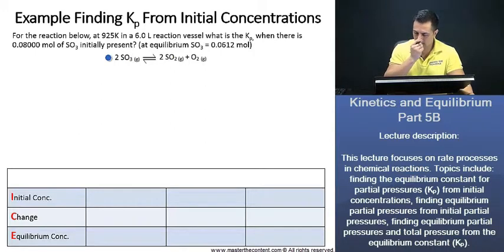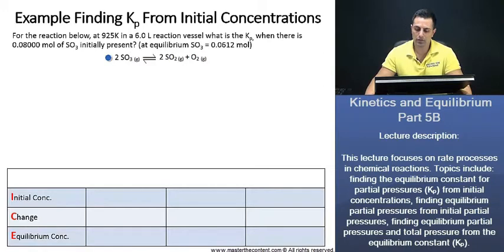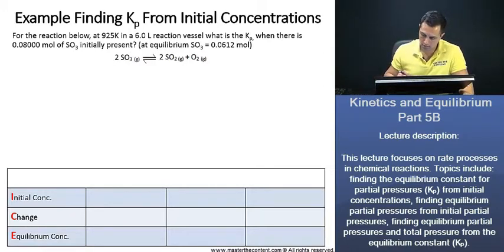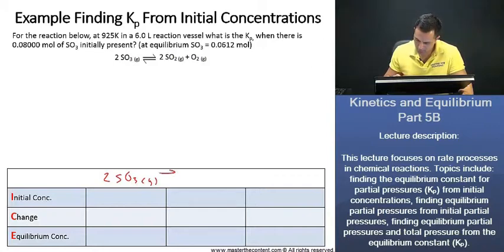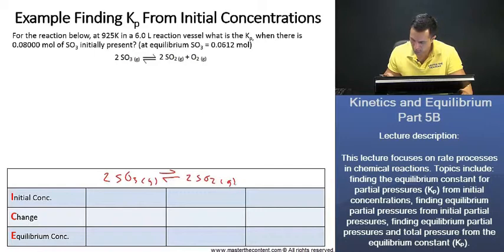Let's get started. If we look at our reaction here, is it balanced? That's what we always need to check first. Yes, our reaction here is balanced. So let's go ahead and write it down. We now have 2 moles of SO3 gas converting to give us 2 moles of SO2 gas plus oxygen gas.